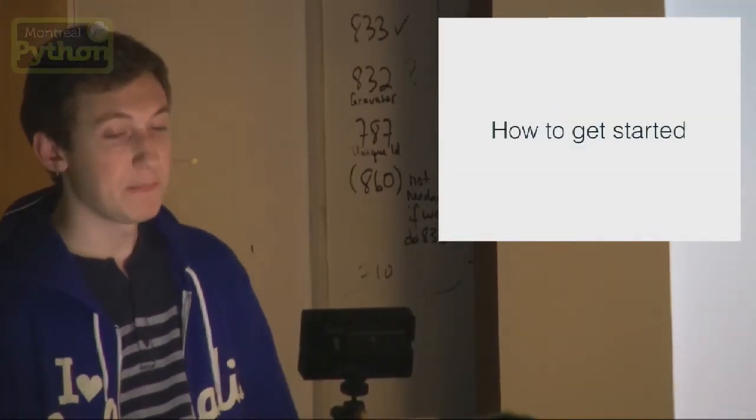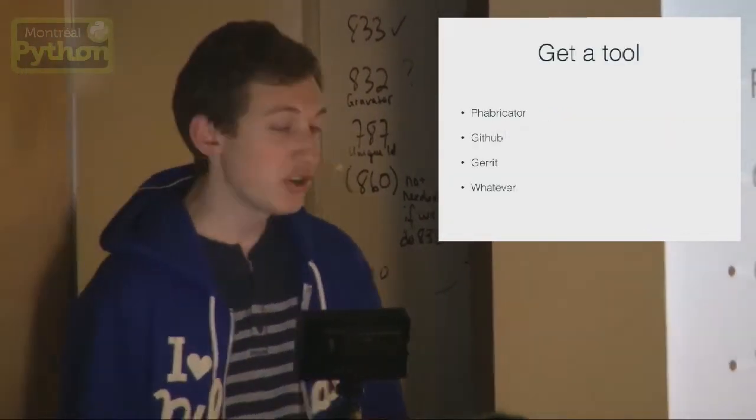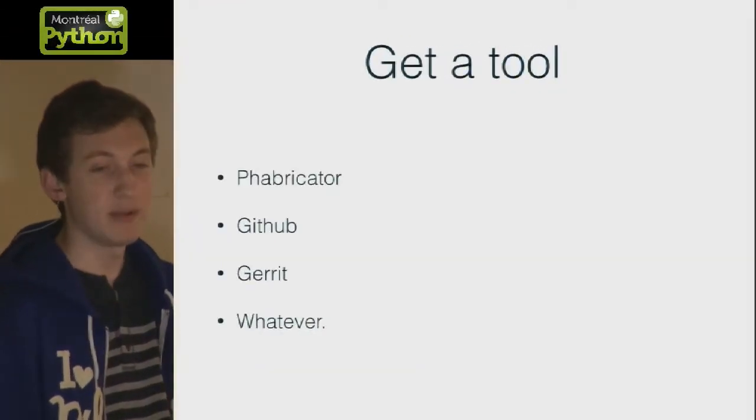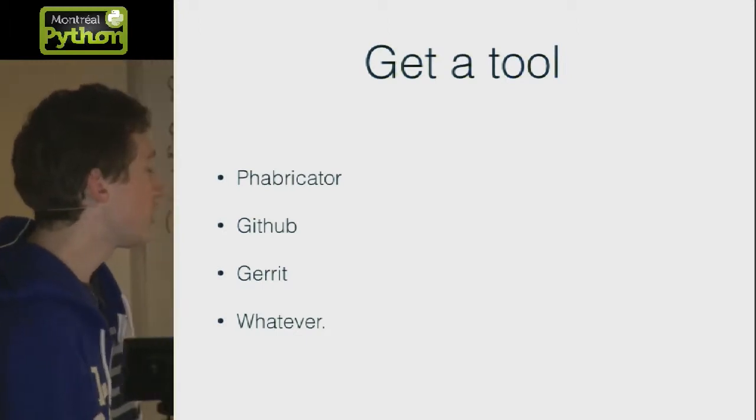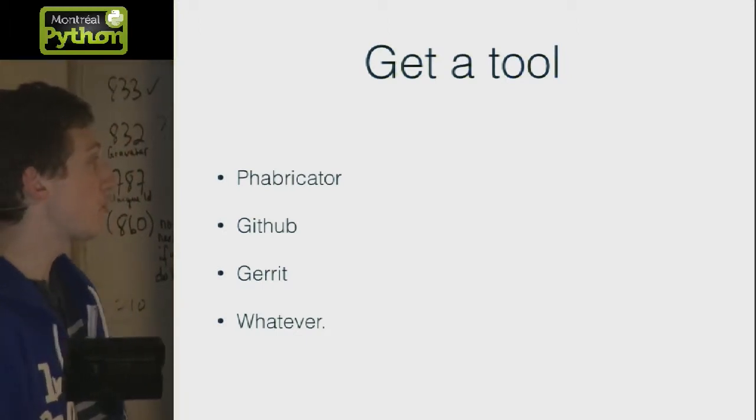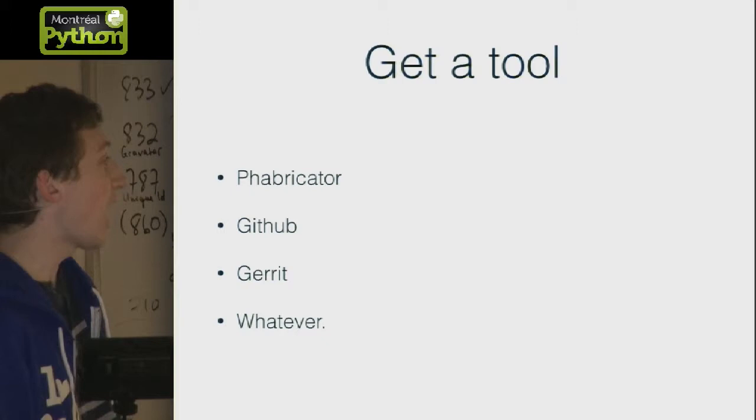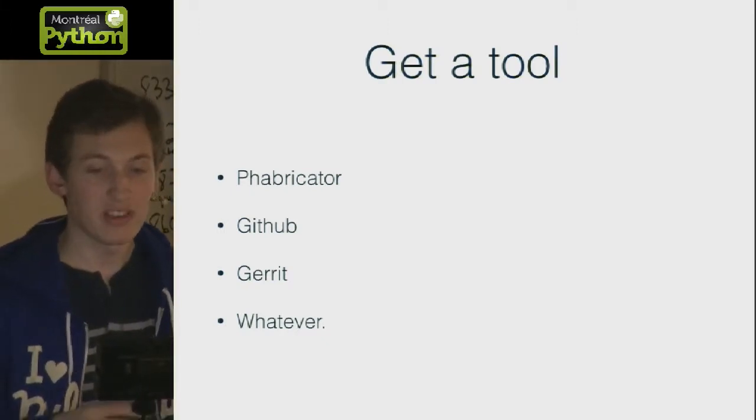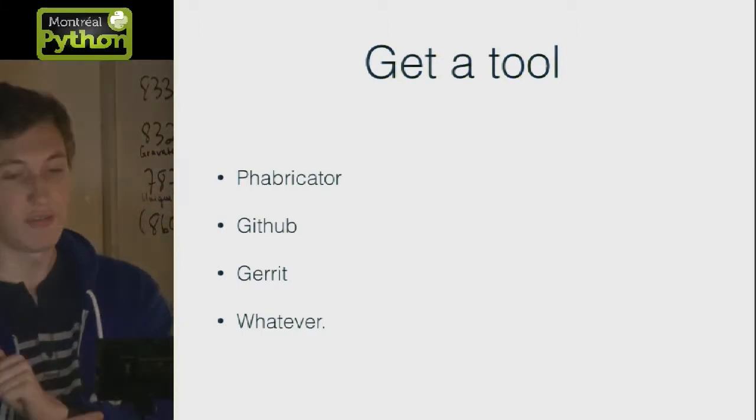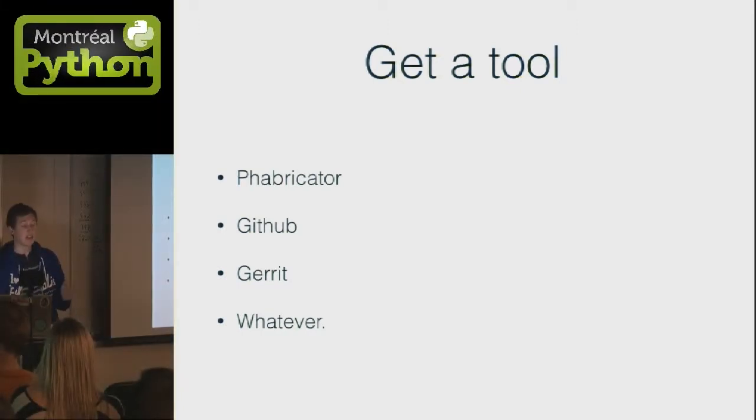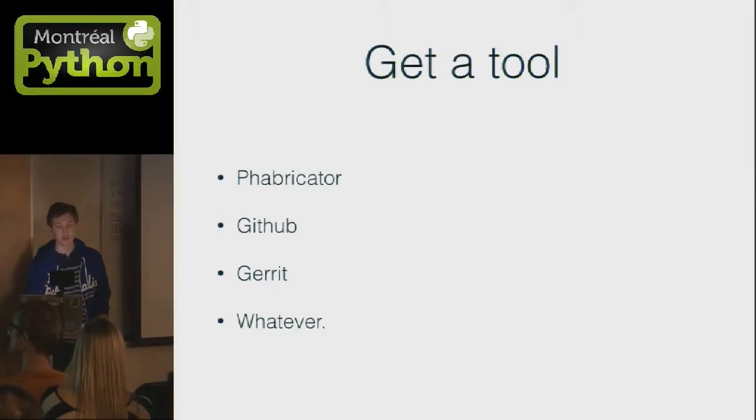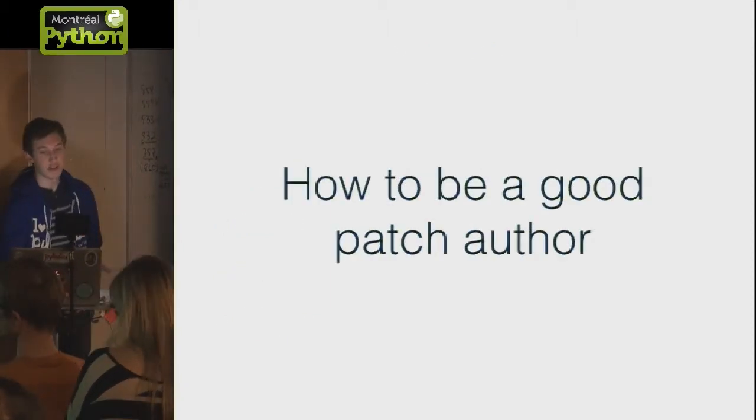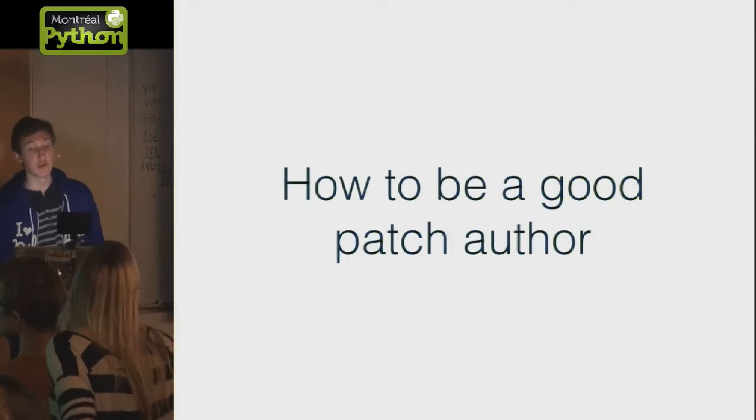Hopefully, I've sold you at this point. How do you get started? First, get a tool to help you out with these. I've used Fabricator, GitHub, Gerrit, whatever tool. It doesn't matter. The only things that are important are the tool helps you keep track of patches and lets you leave comments and feedback on particular lines of code very easily. Any of those tools are fine as long as you have it and you find the tool is easy to work with with your team.